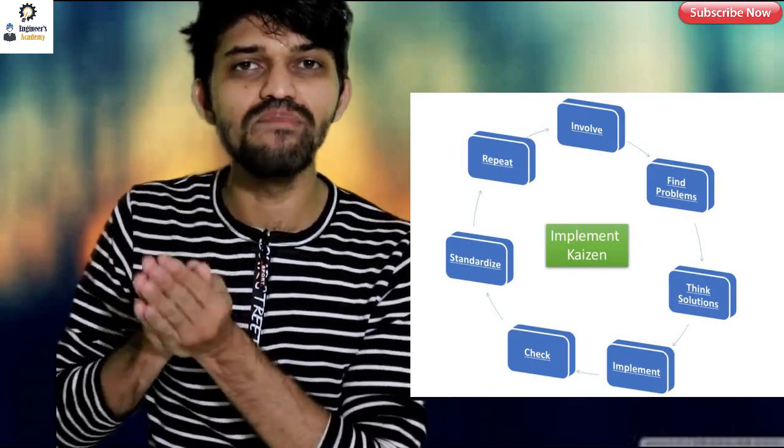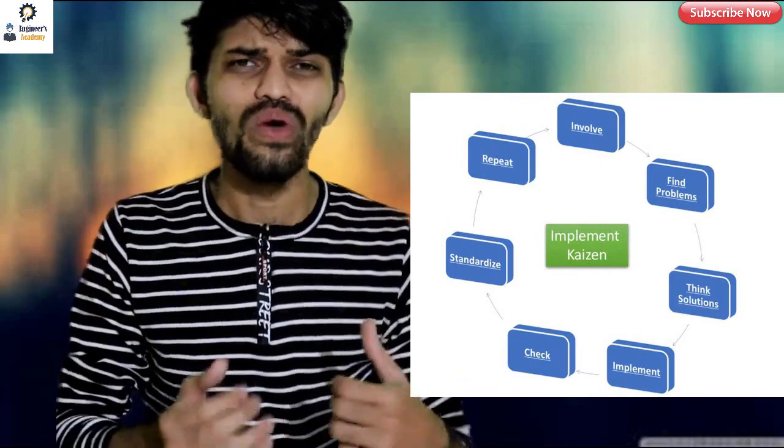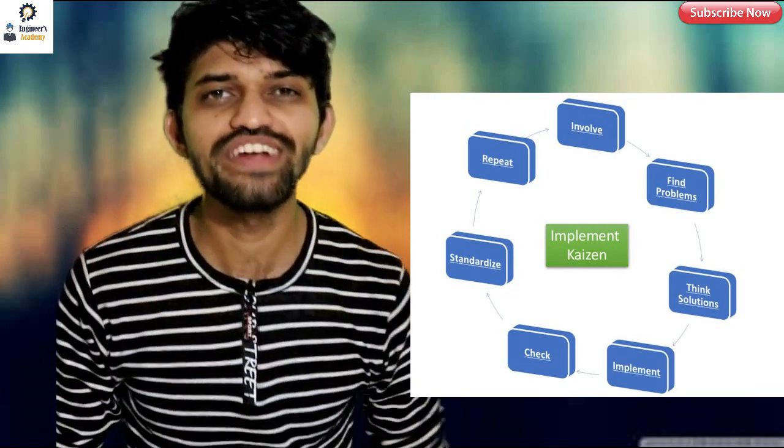This is how Kaizen gets implemented in any organization. These are very important steps to implement the Kaizen process. Most manufacturing industries support Kaizen and want their employees — from a worker up to the high level — to implement it. Most companies implement Kaizen from the lower level all the way to the top level management, motivating people to implement Kaizen in their respective departments.